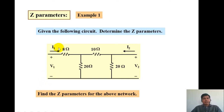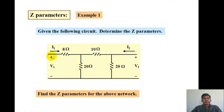There are different types of examples possible. The first example has only resistances. In the next example we will take a circuit having dependent sources. In this first circuit, V1 is the voltage at port 1, V2 is the voltage at port 2, I1 is the input current from port 1, and I2 is the input current from port 2. We need to find the Z-parameters for this network.